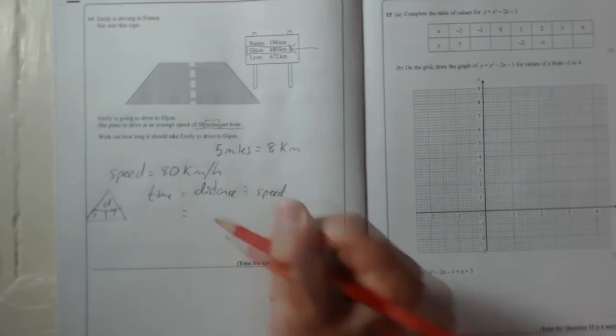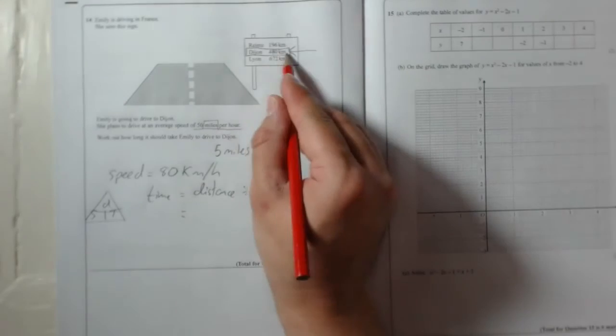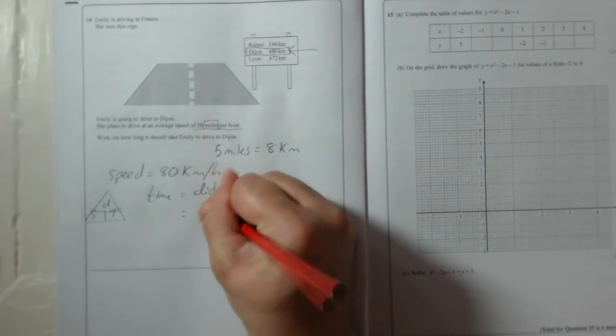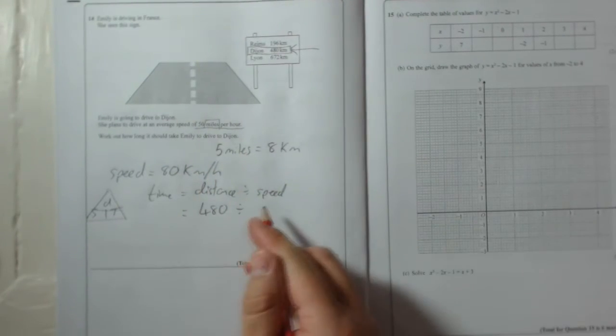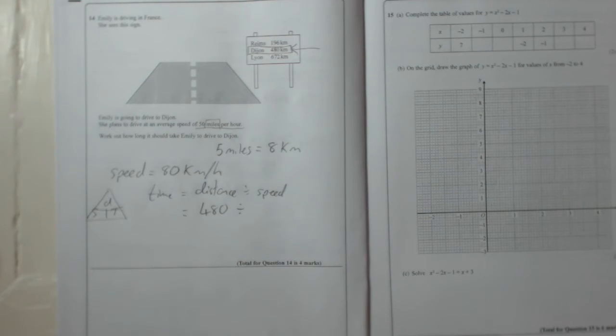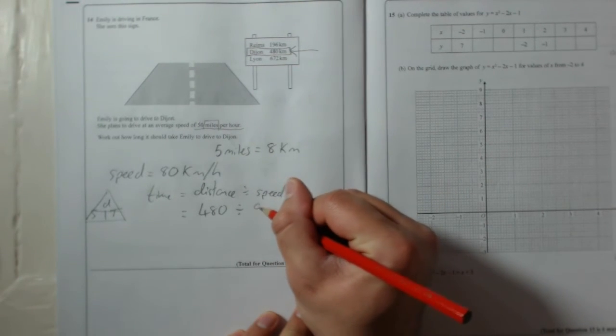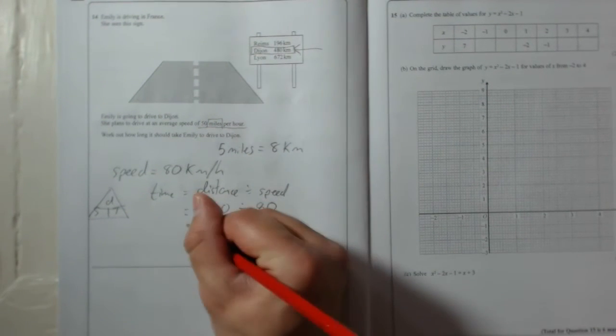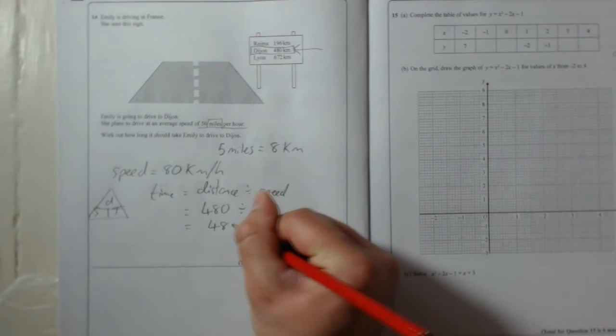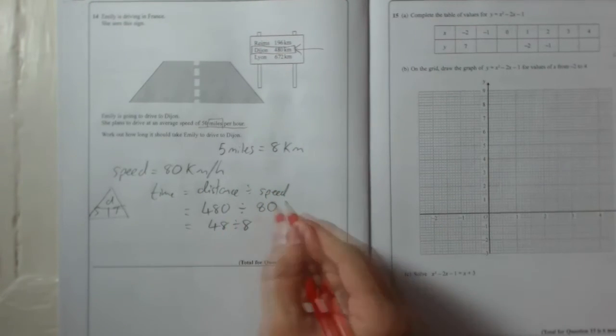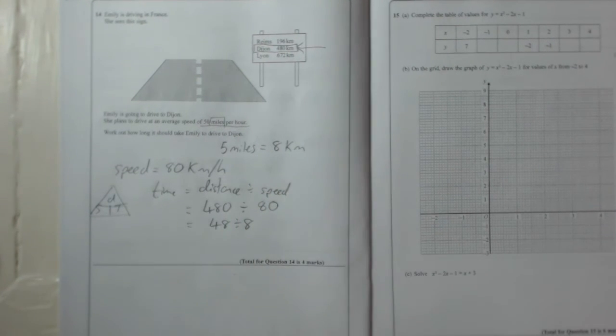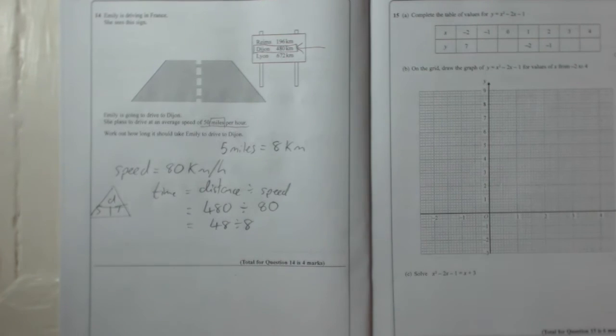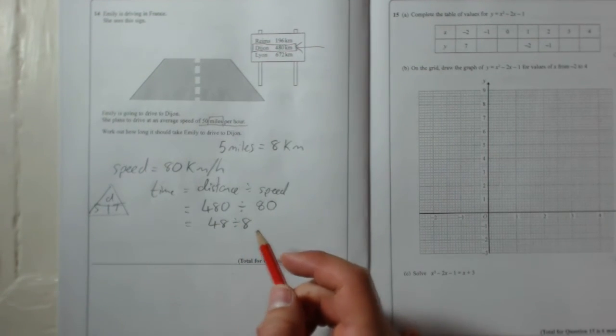So for Dijon, 480 divided by the speed which is 80 kilometres per hour. So 480 divided by 80. That's the same as 48 divided by 8 because you can cancel off the zeros. So how many eights are in 48? That would be six.